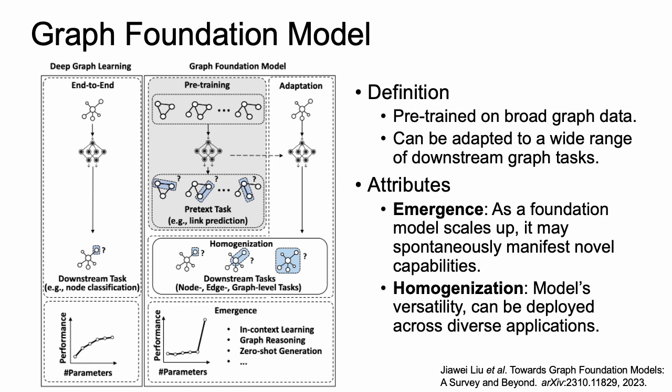This paradigm envisions models that are pre-trained on extensive graph data and can be fine-tuned for a wide array of graph tasks. The graph foundation model is also anticipated to embody two principal characteristics: emergence and homogenization. Here, emergence refers to novel capabilities shown exclusively in large-scale graph models, while homogenization denotes the model's adaptability across different types of graph tasks.